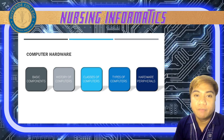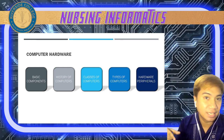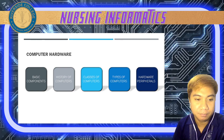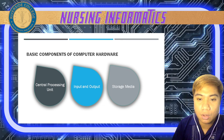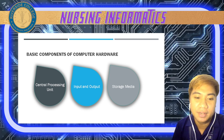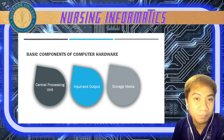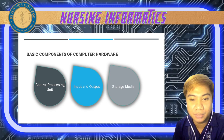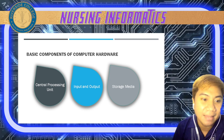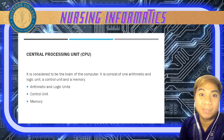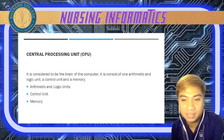If you have further questions regarding the topic, you may message me after the discussion. Now let's have the basic components of our computer hardware. The three basic components include your CPU or Central Processing Unit, your input and output, and your storage media. Let's start with the CPU — it is considered to be the brain of your computer.